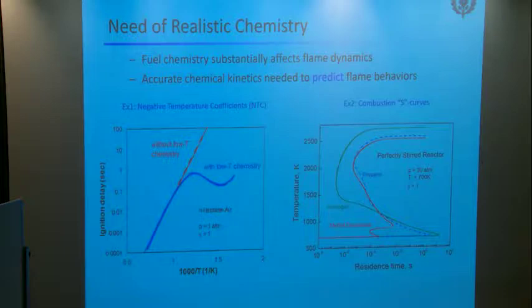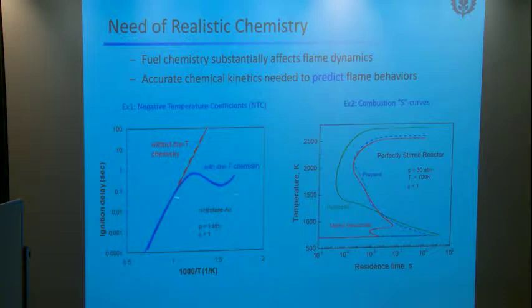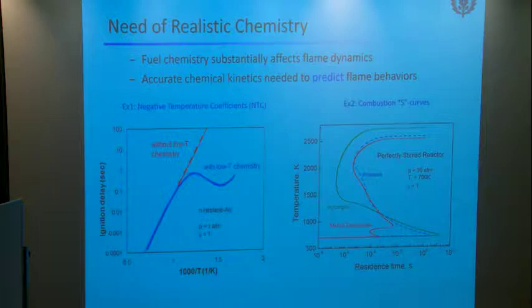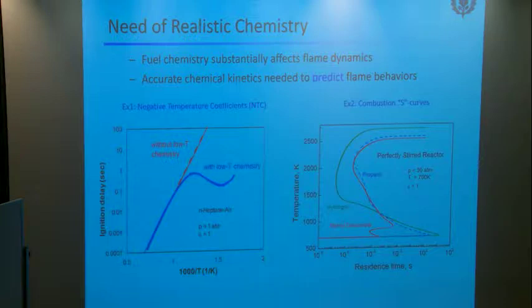I introduced the S-curve here. For ignition, you see this S-curve with the lower turning point, which you need to worry about in relation to ignition delay time. For the IC engine community, a major challenge for model reduction or for using different fuels is that if you use a different fuel in your engine, you may see a lot of surprises. For example, if you put the wrong fuel in your car, you can possibly have a very bad knocking issue and your car will easily be damaged.